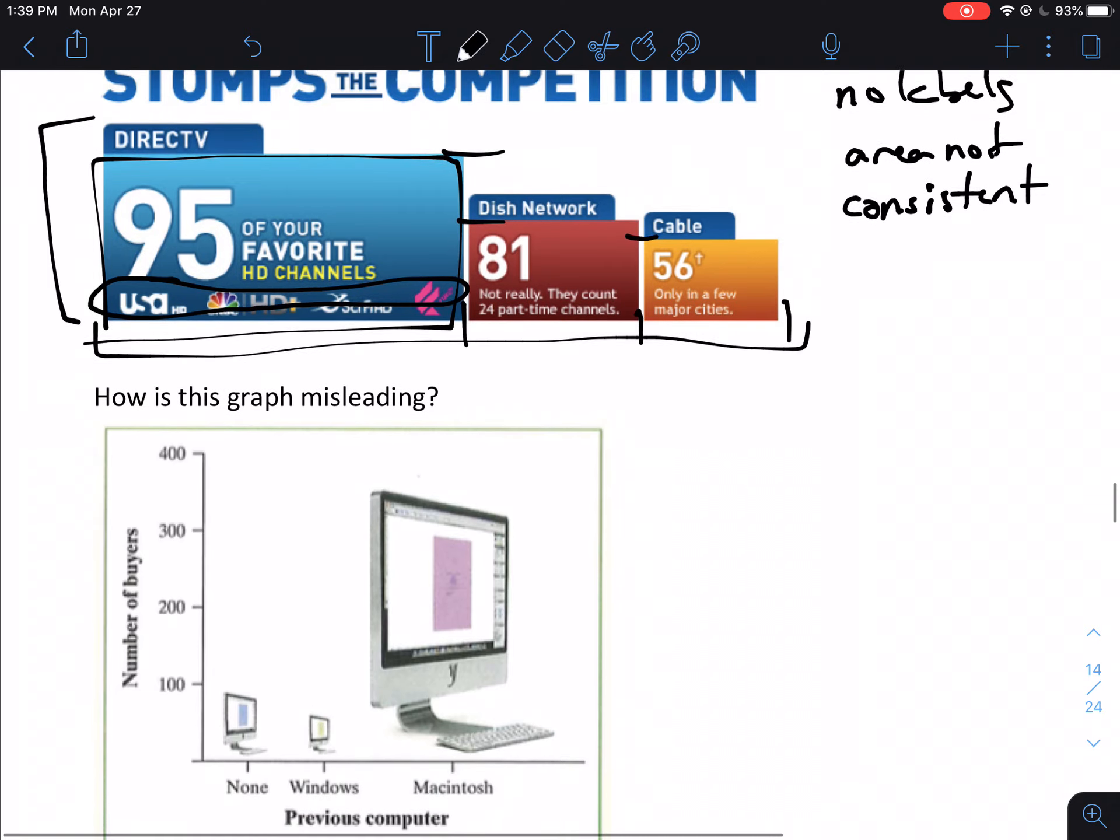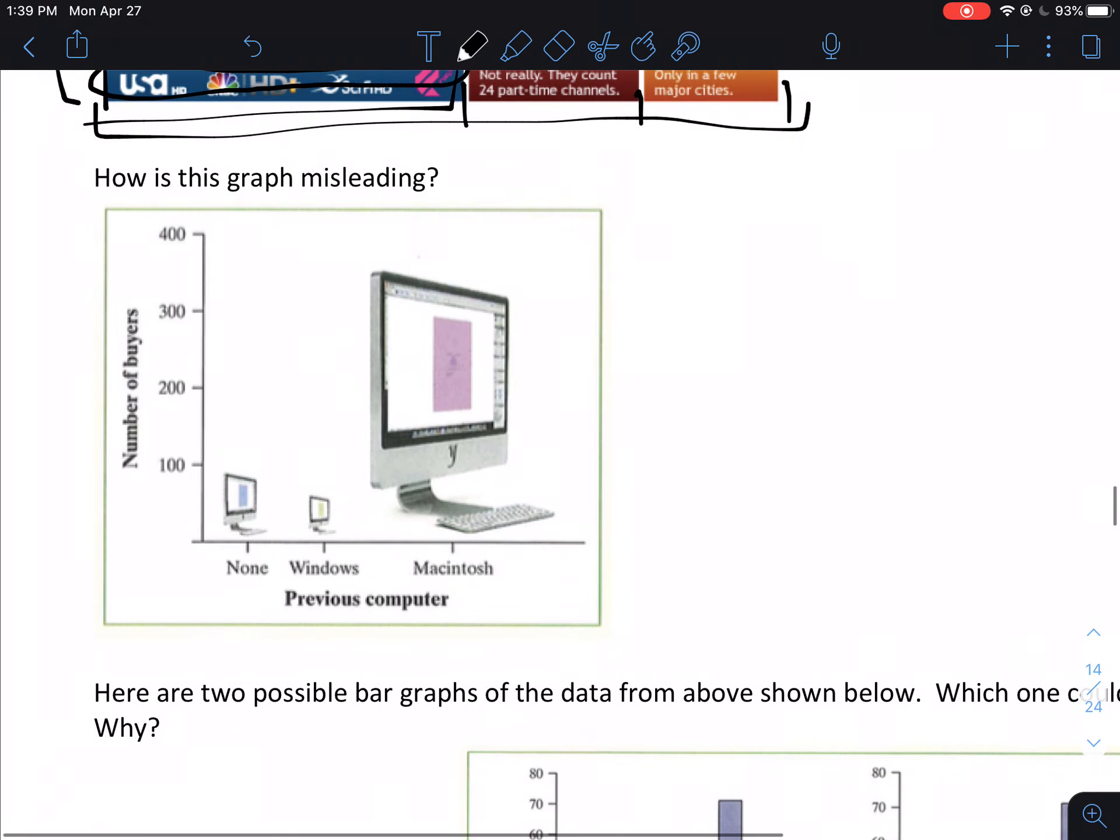Okay, let's take a look at another example. So how would this graph be misleading? So we're told that we're looking at the number of buyers for, it looks like, three different types of previous computer. Where they've got none, Windows, and Macintosh. So the first thing that we've already kind of mentioned is that 3D images can make a graph very misleading. Part of that is because if you're looking at it with a 3D image, one thing would be, where's the height? Is this the height? Or is this the height? That's two totally different numbers. You're looking at maybe 310 versus 350. So a difference of 40 just based on what the height is.